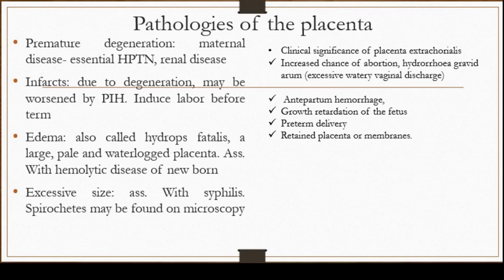The next pathology is excessive size of the placenta, found usually in association with syphilis, where spiral vessels may be identified on microscopy. Finally, the clinical significance of placenta extrachorialis includes an increased chance of abortion, excessive watery vaginal discharge, antepartum hemorrhage, fetal growth retardation, preterm delivery, and retained products after the placenta has been expelled. Thank you very much for your time.